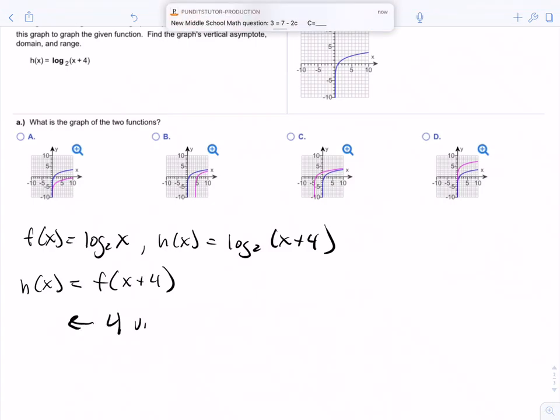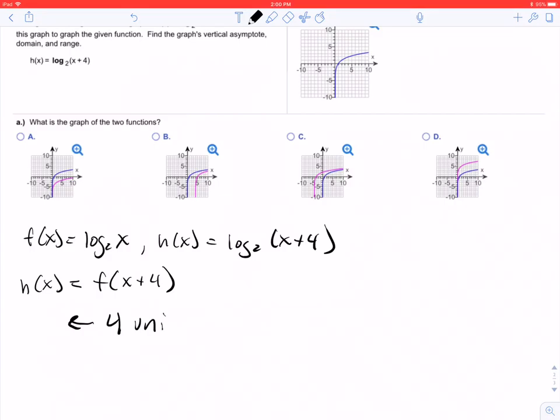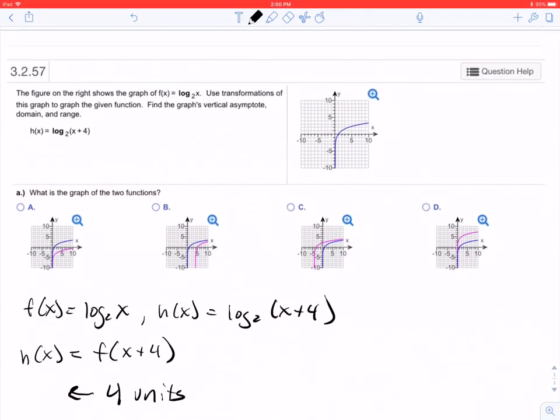This transformation says that we should go left 4 units. So then, if this is the original, the only one that goes left 4 units is C. So my claim is that the first one is C.